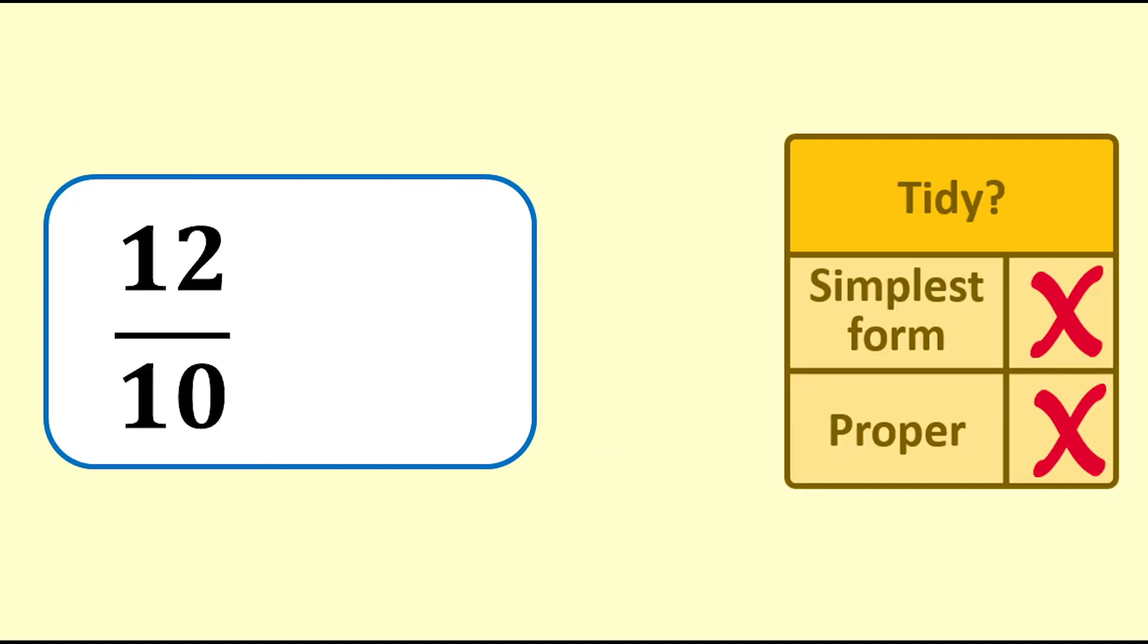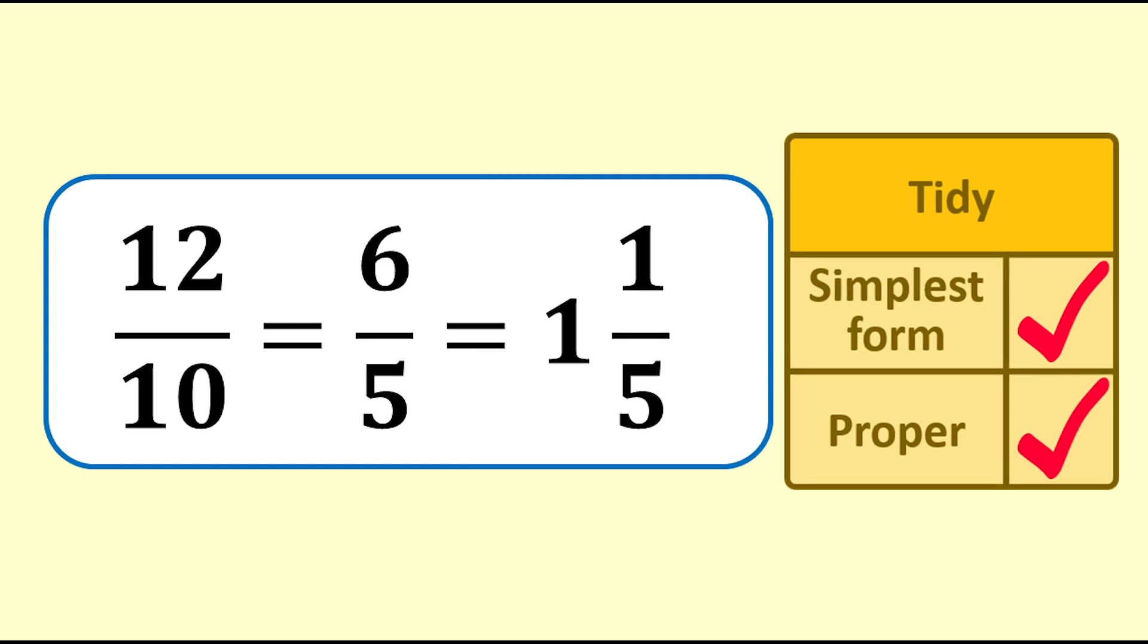First, we simplify 12 over 10 by dividing both numbers by 2, giving 6 fifths. This is now in simplest form, but it is not proper yet. Next we see that 5 fifths make up one whole and there is 1 fifth left over, so the answer is 1 and 1 fifth. The fraction is now tidy.